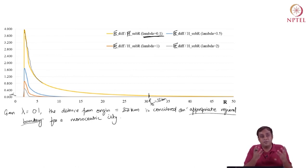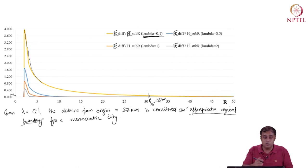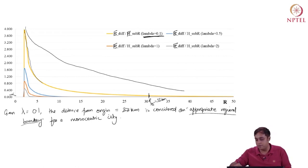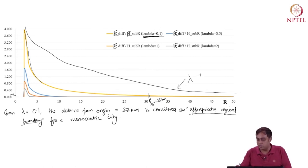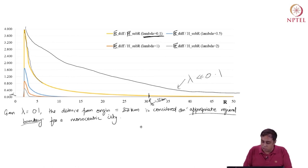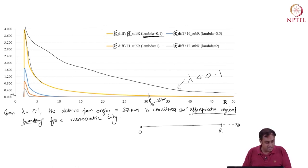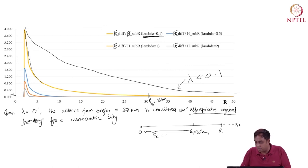A lot can be done with smaller cities too. But with smaller lambda, you can expect a larger required spatial scope. As an exercise, find R_0.99 — the city radius that captures 99 percent of variation — where E_diff / E(R) equals 0.01, with lambda equals 0.1. Please work this out in the next three minutes.